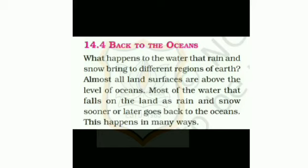What happens to the water that rain and snow bring to different regions of earth? Almost all land surfaces are above the level of oceans. Most of the water that falls on the land as rain and snow sooner or later goes back to the oceans. This happens in many ways.